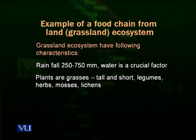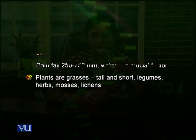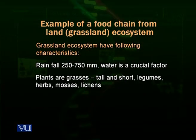Plants that flourish in the grasslands include tall and short grasses from the grass family, leguminous plants, herbs and small plants, and mosses and lichens. These are the common plant inhabitants of a grassland ecosystem.